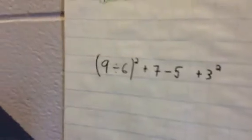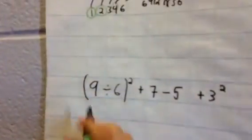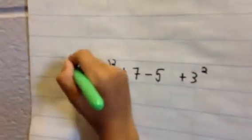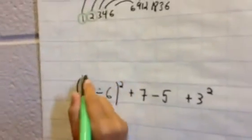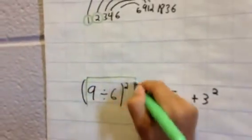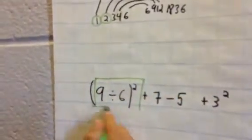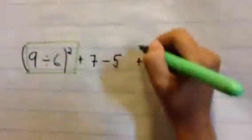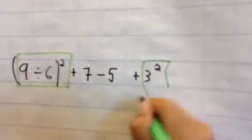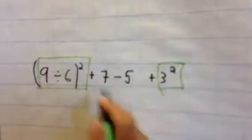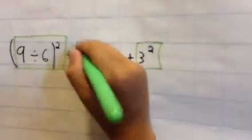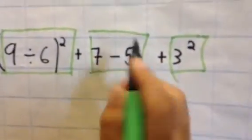So we're going to have to do the brackets first — we're going to put that in a square. Then we're going to do the exponents next. And then we're going to do 7 minus 5.